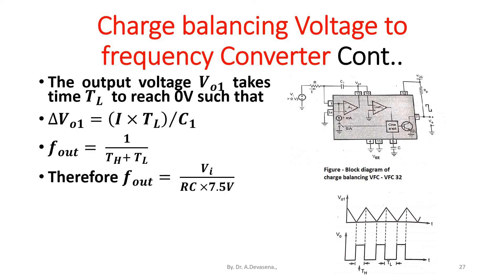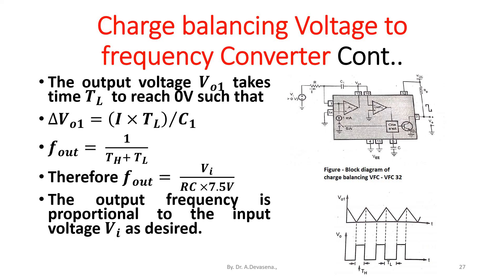Therefore the output frequency is equal to V_I divided by RC times 7.5 volts. The output frequency is proportional to the input voltage V_I as desired. That is we have obtained the voltage to frequency conversion with the help of this circuit charge balancing type.